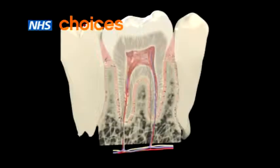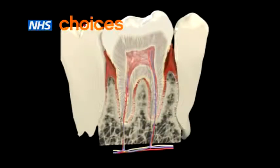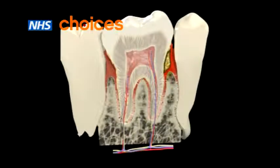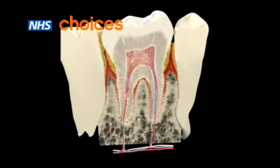Sometimes an abscess occurs in the supporting tissues around the tooth. This is called a periodontal abscess. It is usually associated with gum disease, when the gums become inflamed and separate from the teeth, allowing bacteria to collect in pockets around the tooth root.